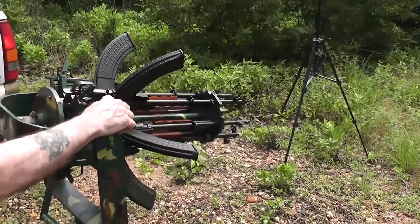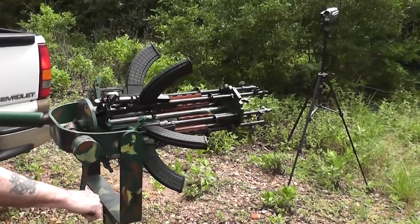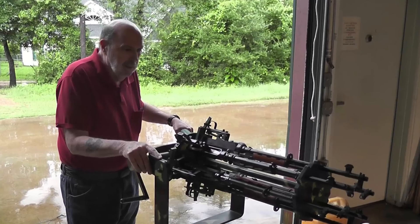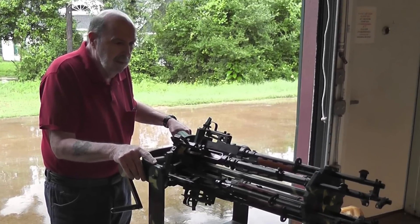This mini-arsenal is a homemade Gatling gun that puts six SKS rifles together. They then spin around and fire in turn when a hand crank is turned.